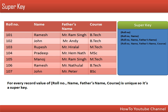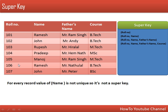Now we will consider the single attribute name. Looking at the data, we have one record with a name equal to Ramesh and another record with the same value. So this attribute is not unique and cannot uniquely identify records. Therefore, name attribute cannot be taken as a super key.